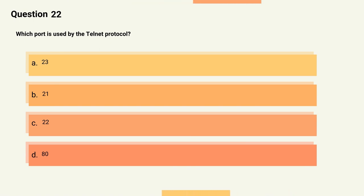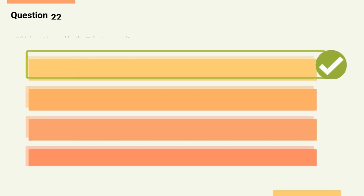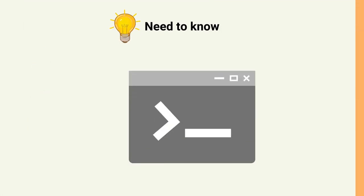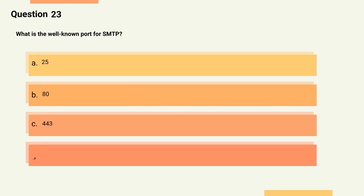Question 22: Which port is used by the Telnet protocol? Options: A) 23, B) 21, C) 22, D) 80. The correct answer is Option A, 23. Explanation: Port 23 is the well-known port used by the Telnet protocol for remote terminal access to a server.